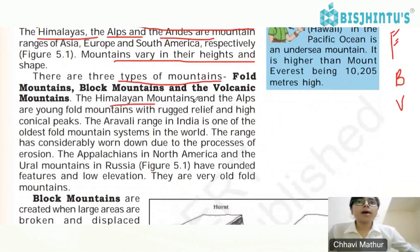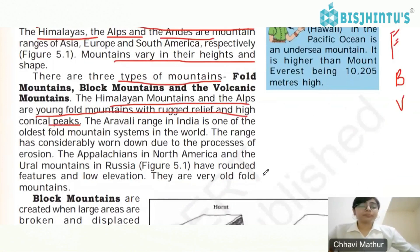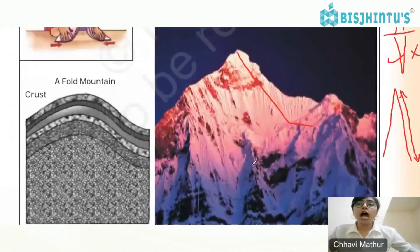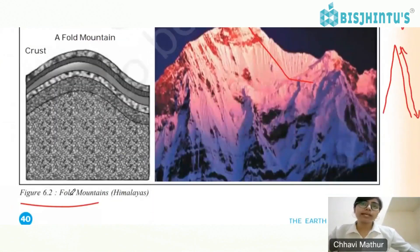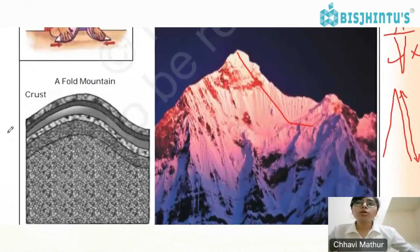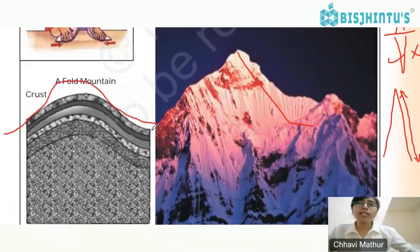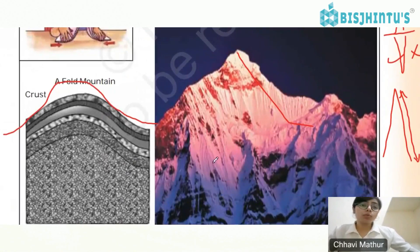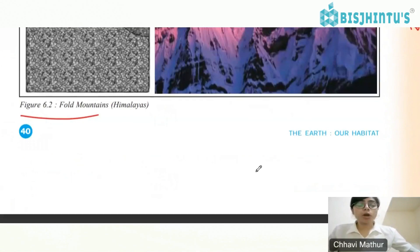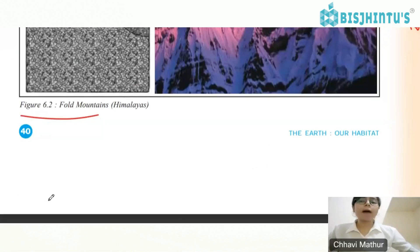The Himalayan mountains and the Alps are young fold mountains with rugged relief and high conical peaks. Looking at figure 6.2 on page 40, it shows how fold mountains are formed due to internal processes inside the earth. This will be studied in more detail in higher classes, but here is a brief explanation.